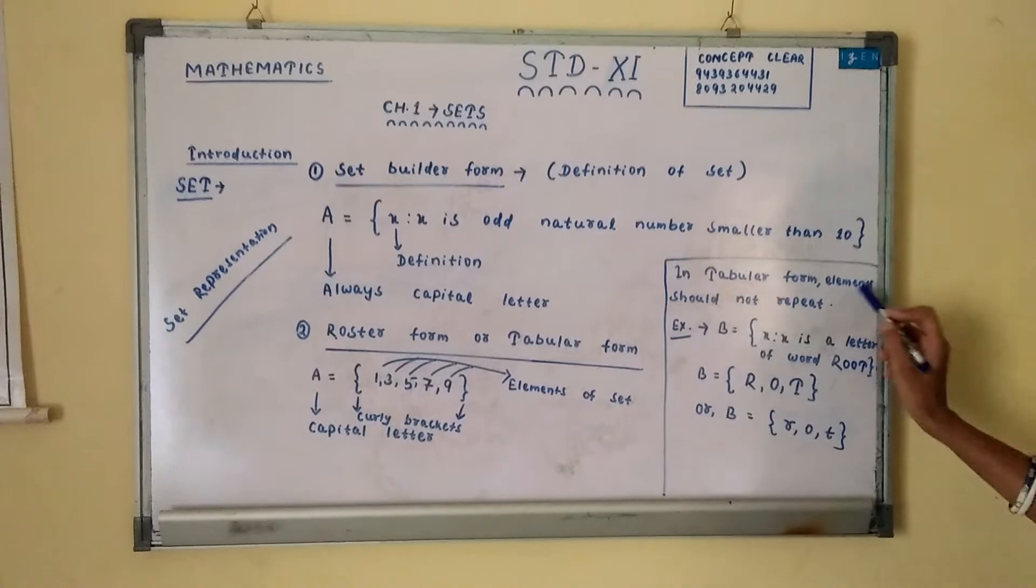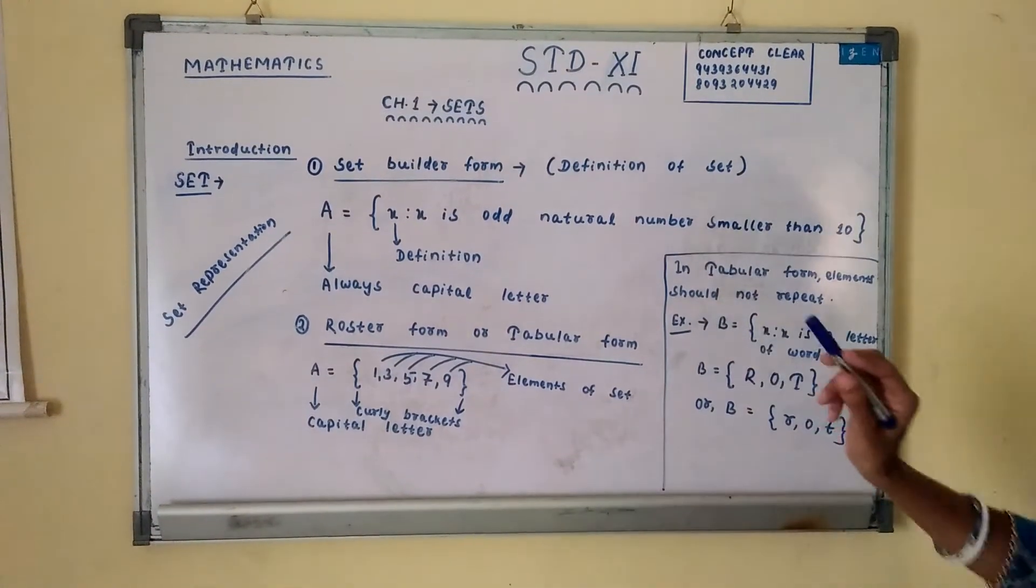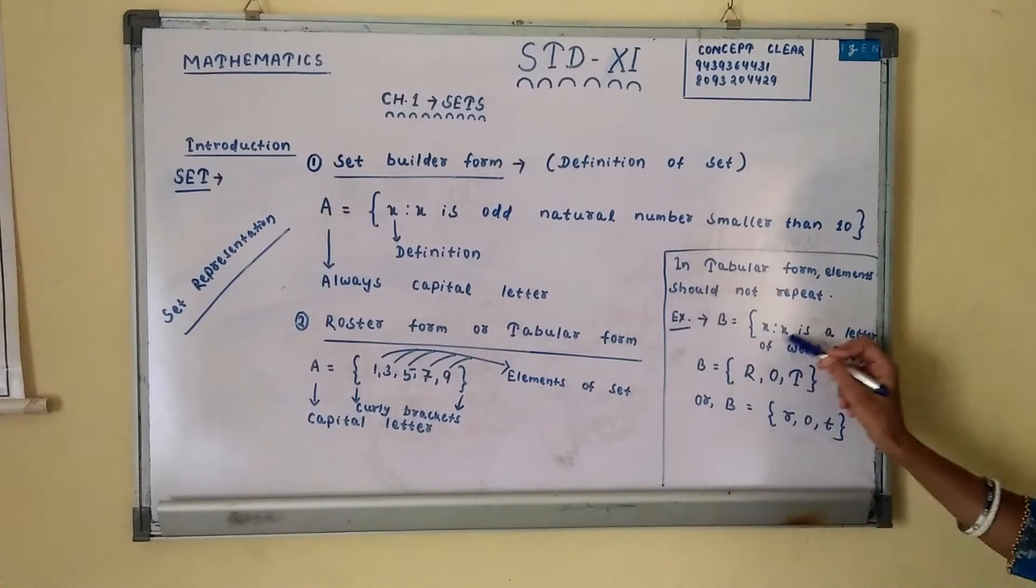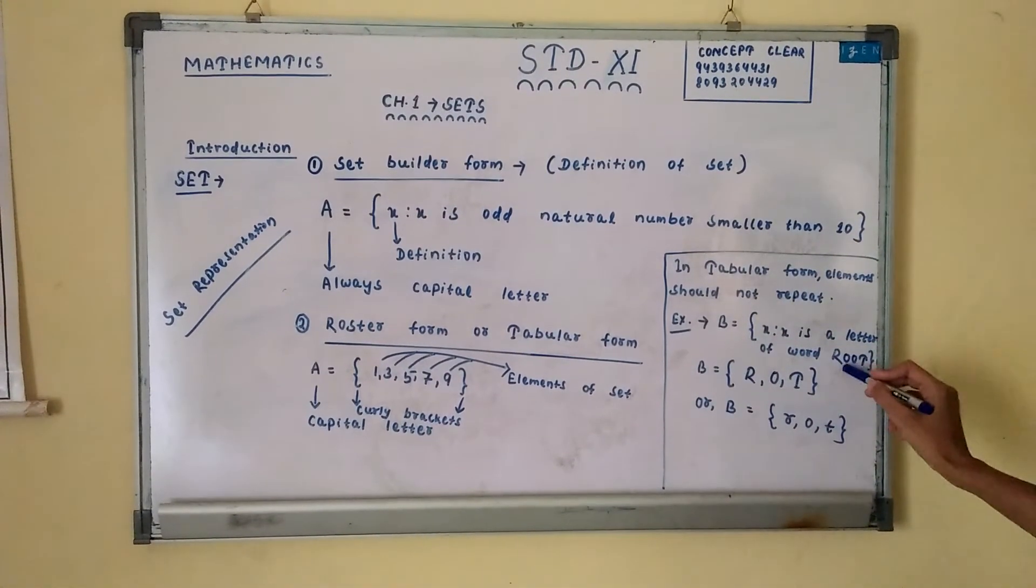In tabular form, elements should not repeat. For example, B is equal to a set x such that x is a letter of word root.